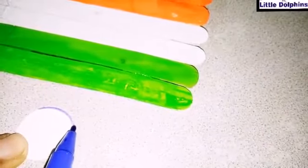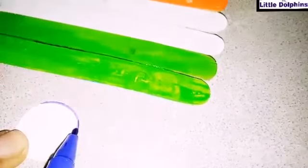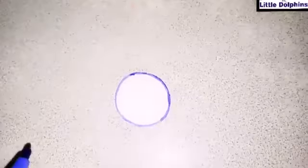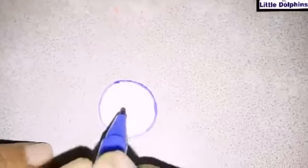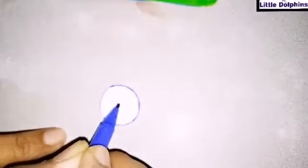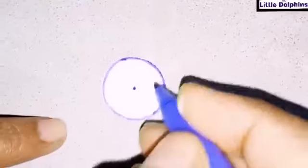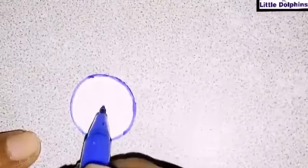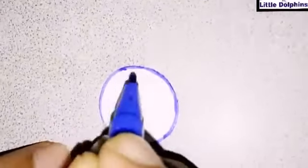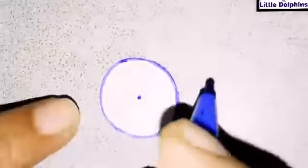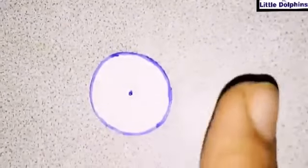Now make one point here on the center. And now we are making its spokes. You know, kids, there are 24 spokes in the Ashok Chakra of our Indian flag. This is called Ashok Chakra, and it is on the white strip.